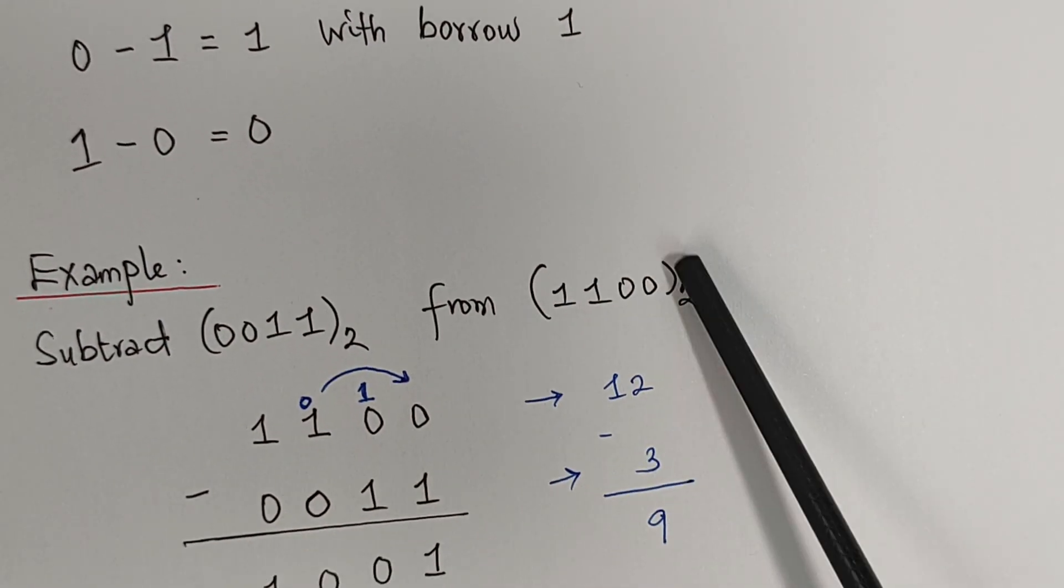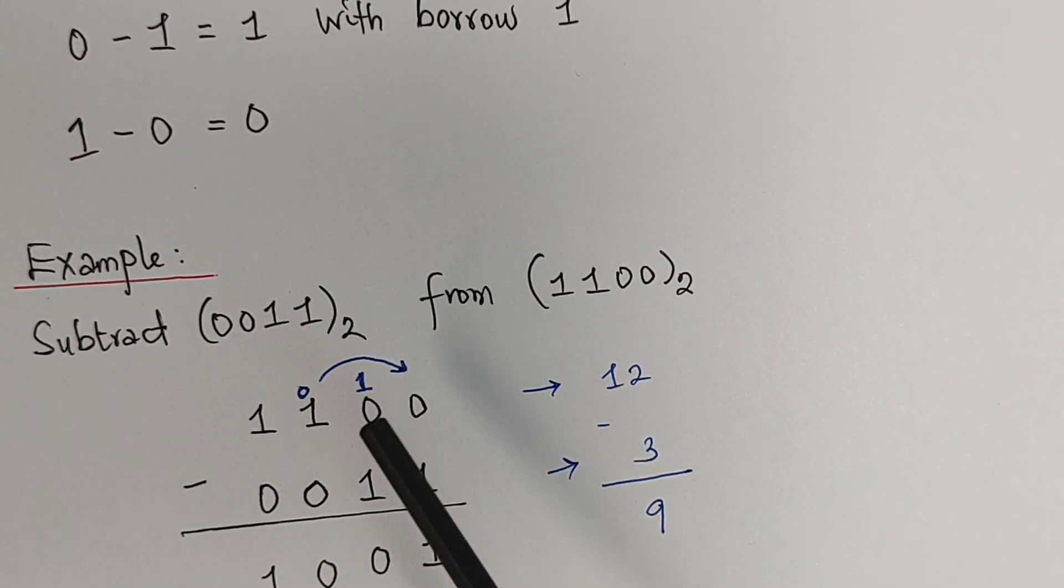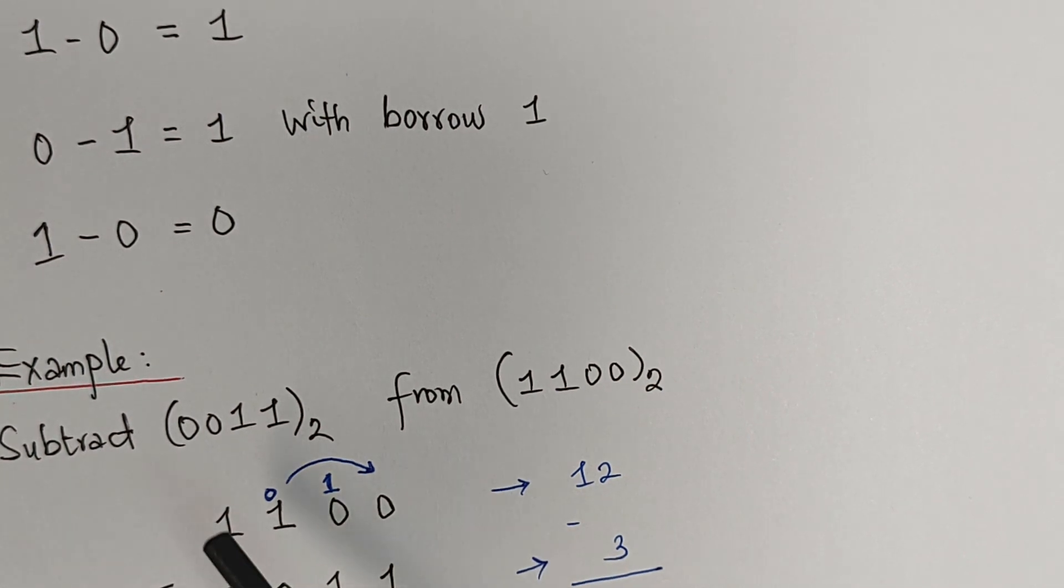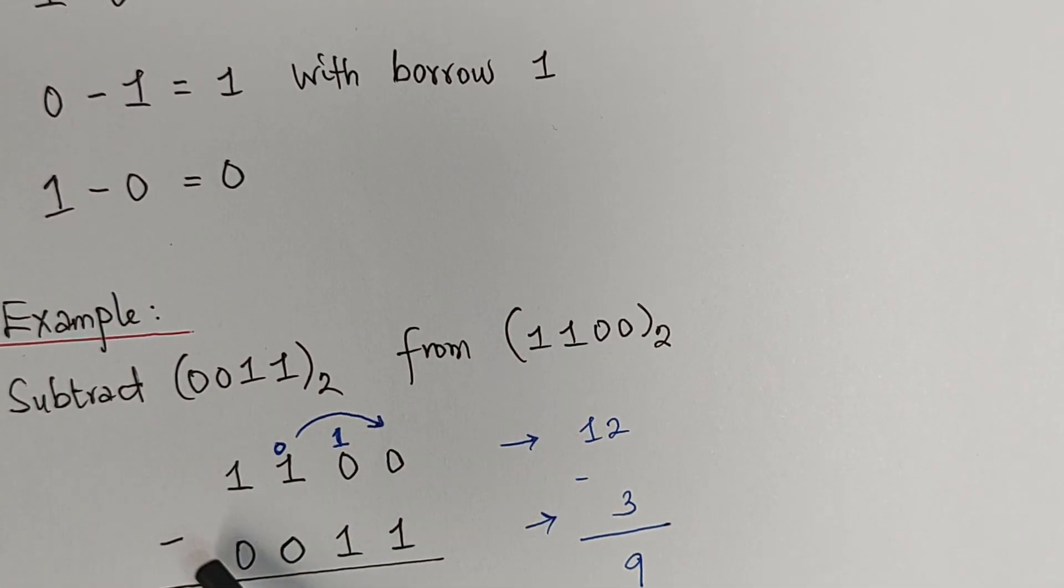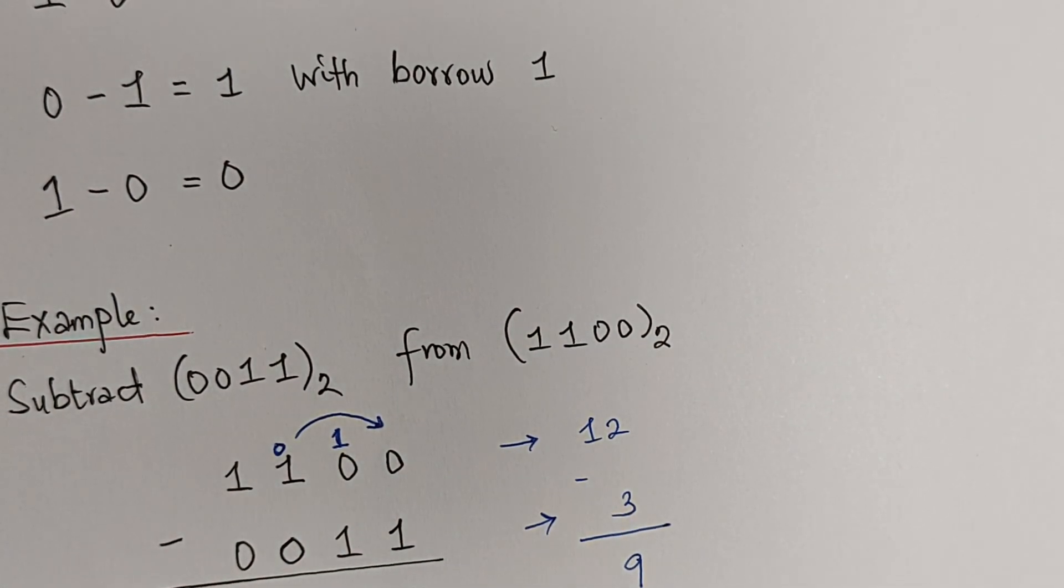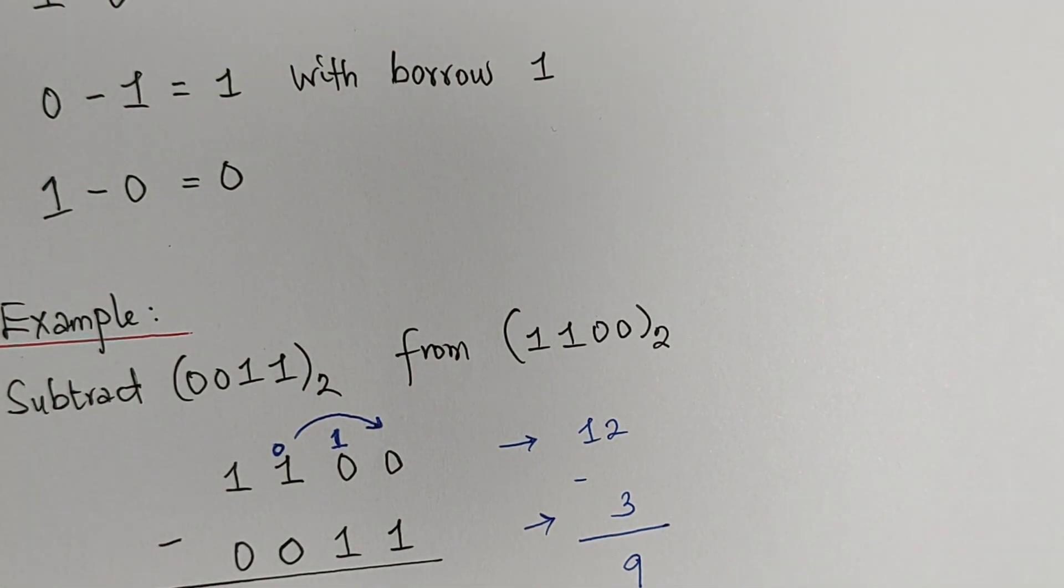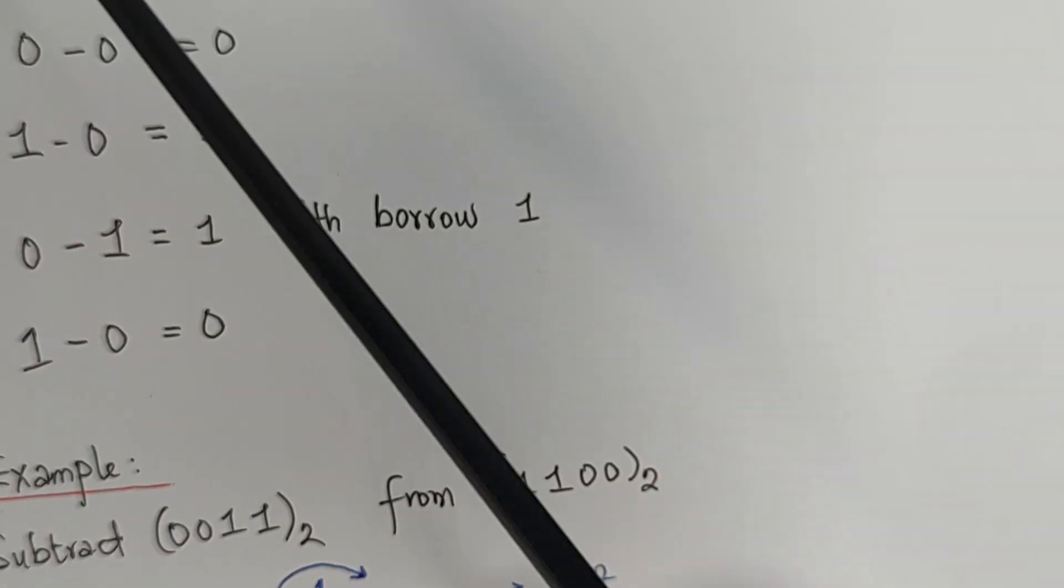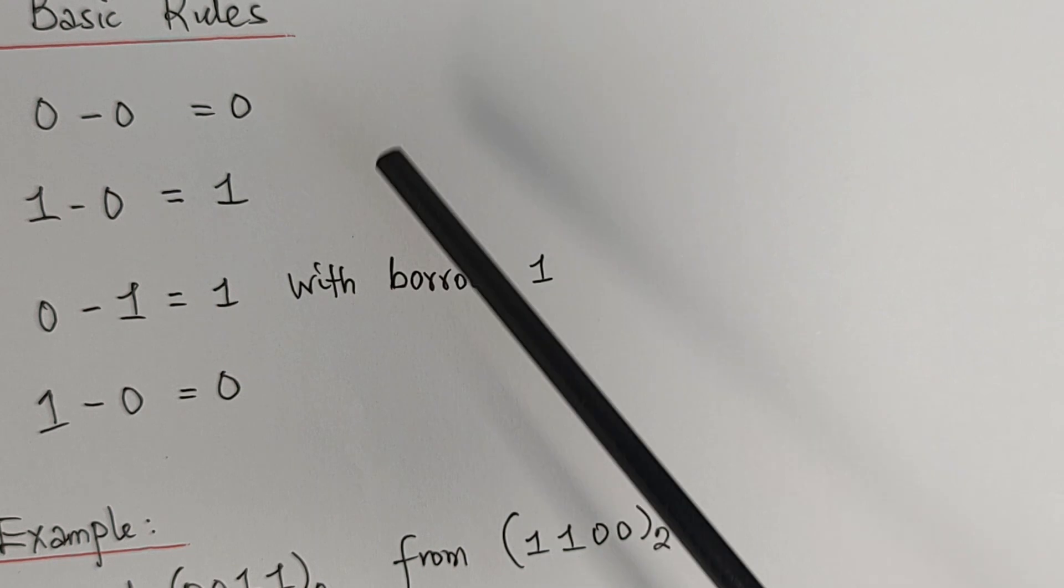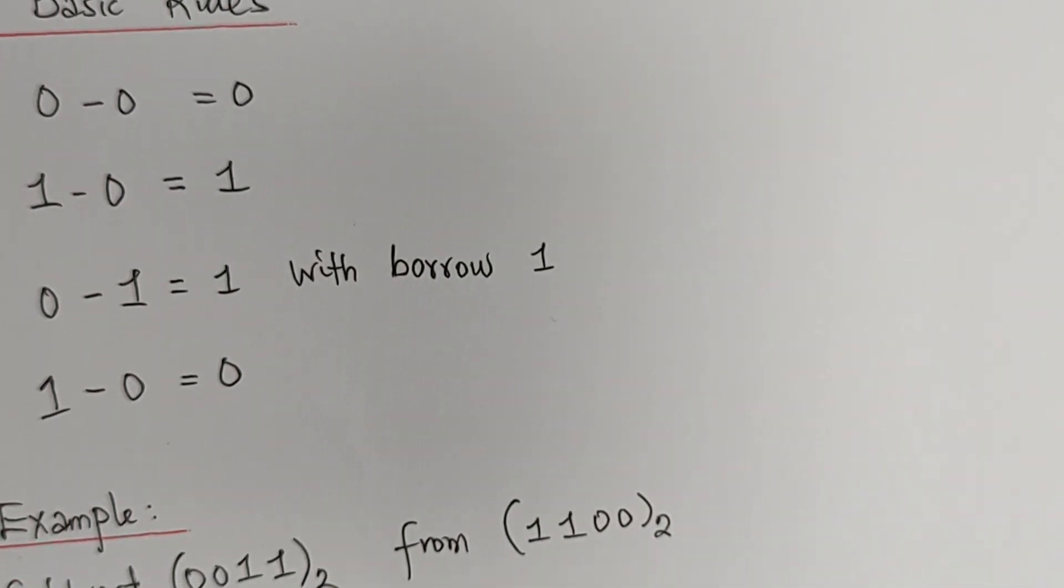All we need to do is to take this first and subtract from this. So we have 1100 minus 0011. Remember, we have to do this operation while considering the basic rules which I have just mentioned.